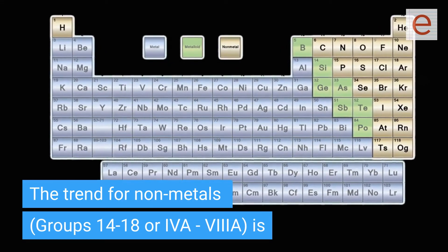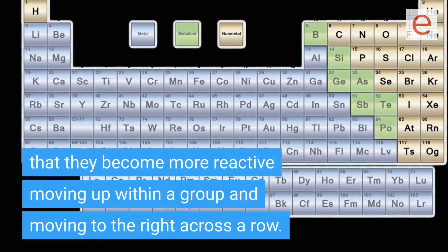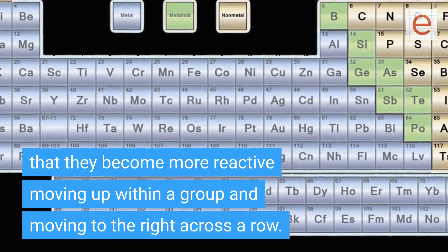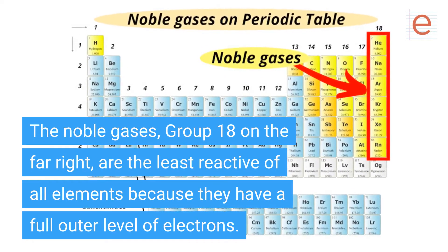The trend for nonmetals, groups 14 to 18, is that they become more reactive moving up within a group and moving to the right across a row. The noble gases, group 18 on the far right, are the least reactive of all elements because they have a full outer level of electrons.